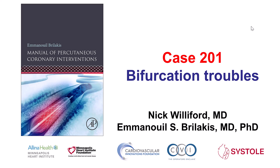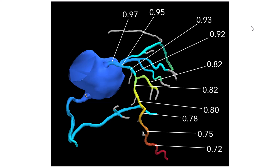This is Nick Williford and Manos Brilakis presenting case 201 for the Manual of Percutaneous Coronary Interventions. This is a case that had difficulties with treating an LAD diagonal bifurcation. The patient presented with angina and had a coronary CT screening test. This is the FFR-CT, showing hemodynamically significant lesions in the LAD with a distal FFR-CT of 0.72 and a significant drop between the proximal and the middle LAD at the bifurcation of a diagonal branch.